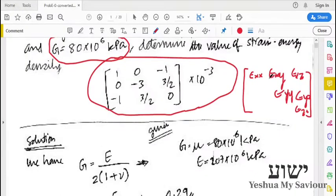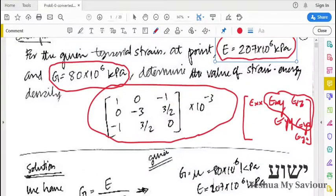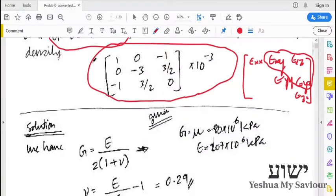We can see that this is a symmetric tensor, and everything is represented in terms of epsilon. This is a tensorial strain or a small strain tensor.